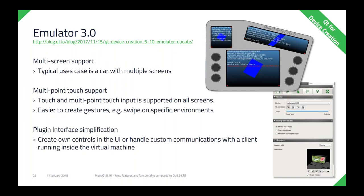On the emulator, which is part of the Qt for Device Creation commercial packaging, we have Emulator 3.0. As covered earlier in the framework, we now support multiple different screens, and that is now supported in the emulator too. The gesture framework improvements — gestures done right — are now also working in the emulator, including multi-point touches and simultaneous touches on different screens. We've also been cleaning up and simplifying the plugin interface for the emulator — how you create your own extensions, for example for simulations like changing a GPS location or adding sensors to your applications through the emulator.